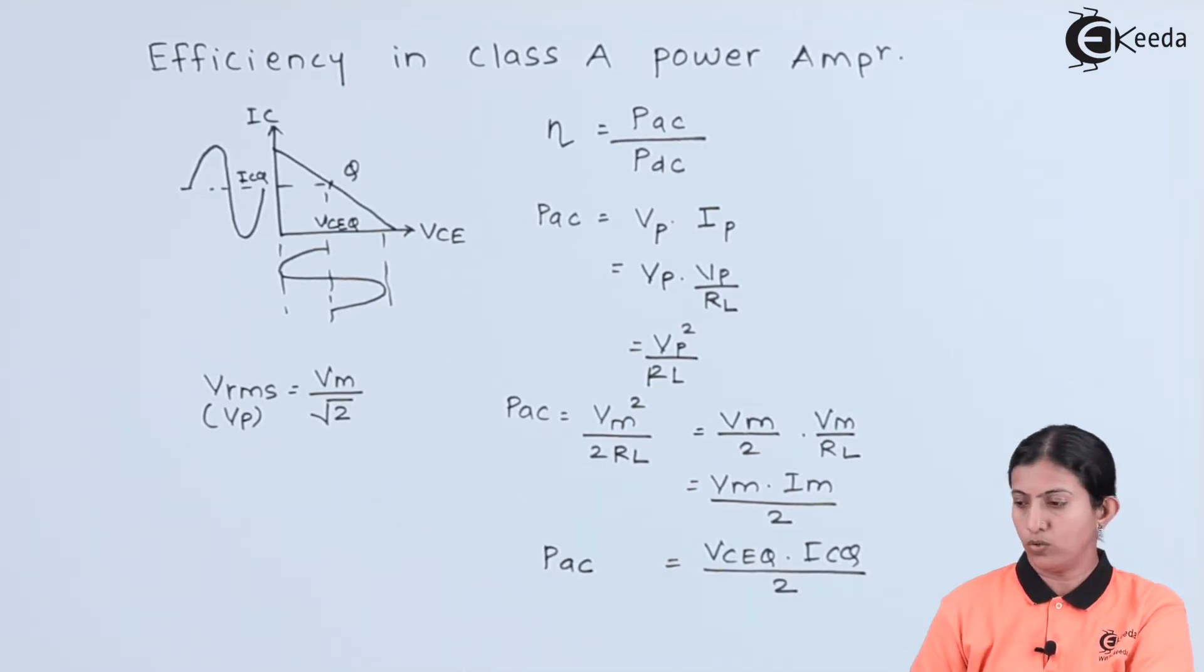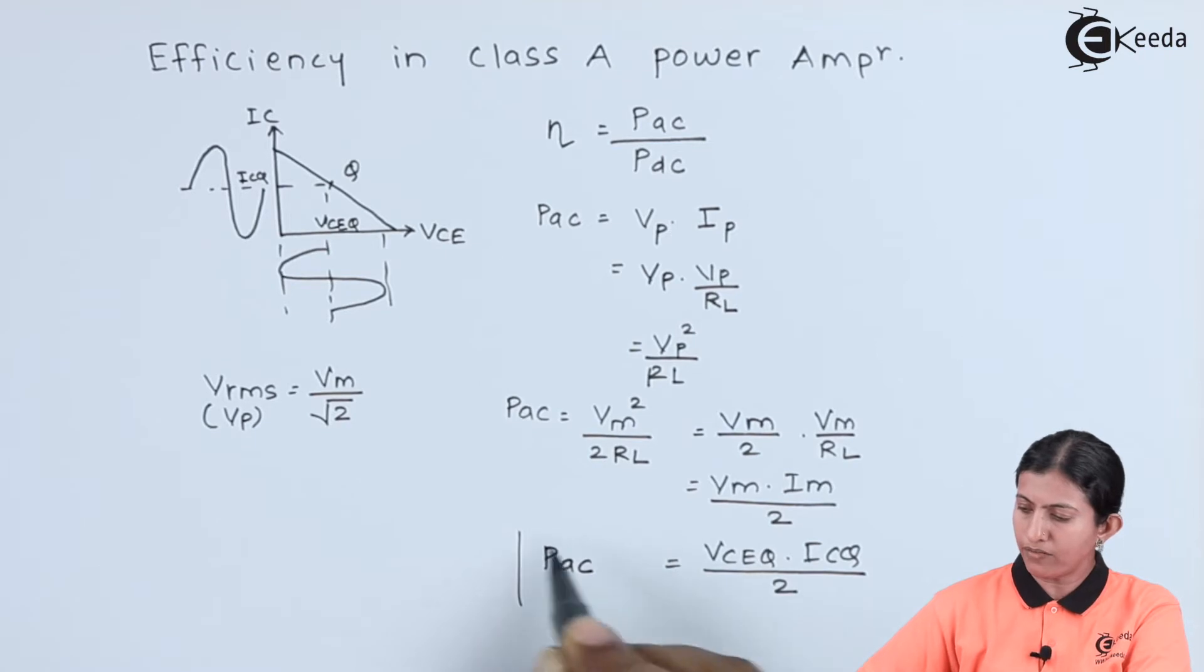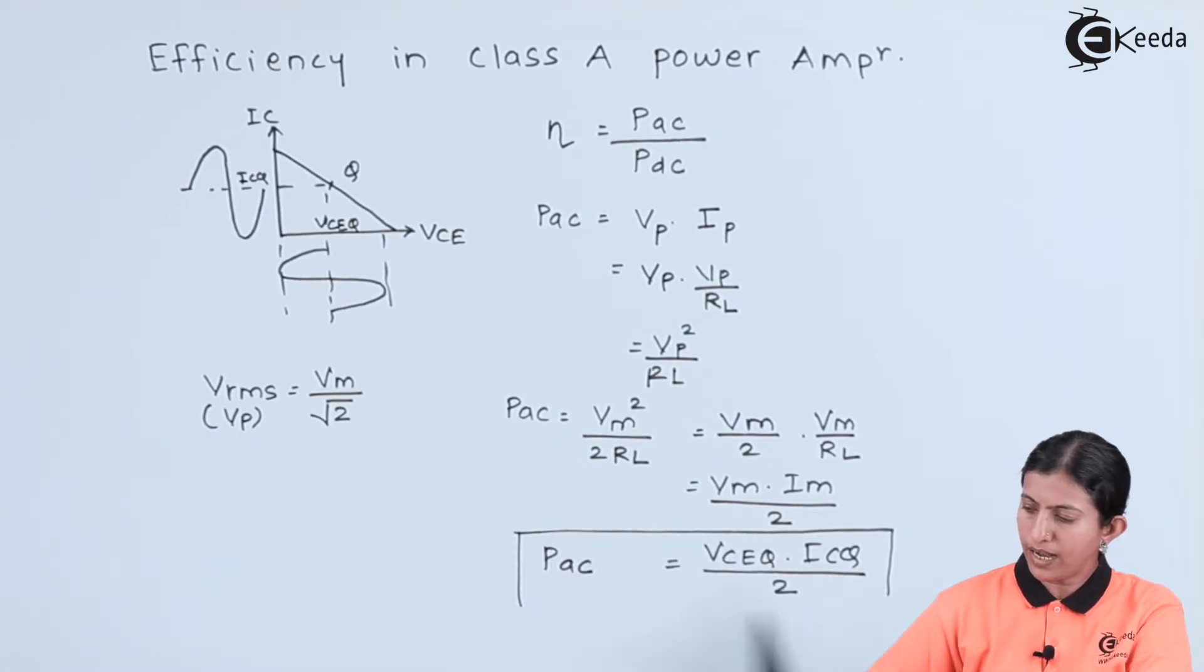PAC is equal to VCEQ into ICQ divided by 2. This is the AC power available at the transformer coupled amplifier.